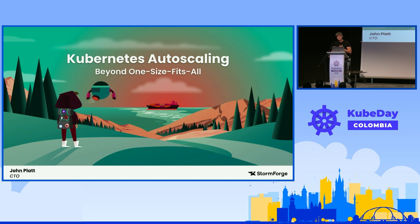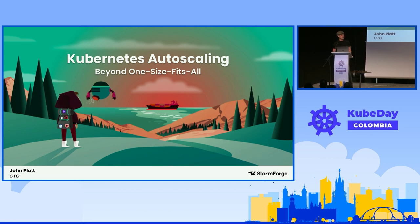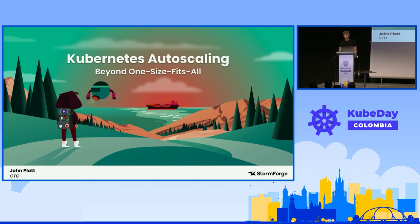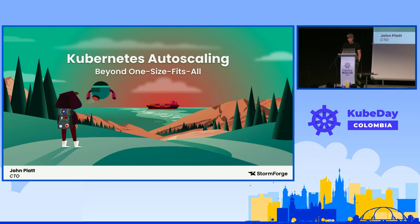My name is John, I'm the CTO of StormForge. I work with Rafa from Two Talks to Go. You might be able to tell from my accent - I'm British, but I live in America now, in Washington D.C. First time in Latin America, delighted to be here, it's been beautiful and amazing. I'm here to talk about autoscaling on Kubernetes.